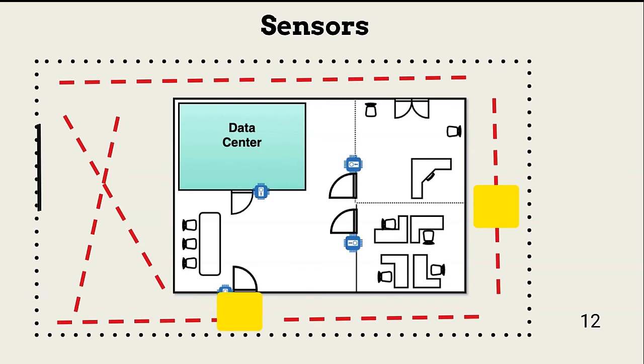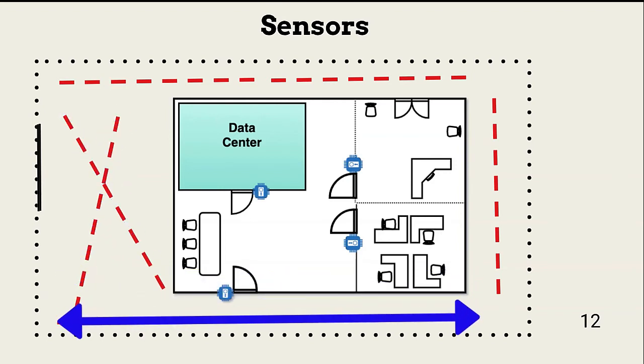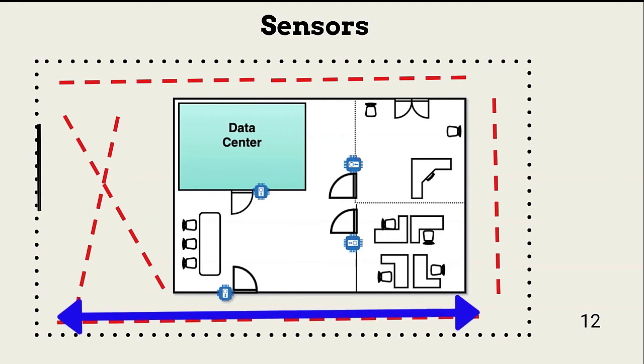Pressure mats can be placed on probable avenues of approach and around structures. An intruder simply needs to step on a mat placed beneath the soil to set off an alarm. Photometric or photoelectric sensors use light beams. Breaking a light beam sets off an alarm.